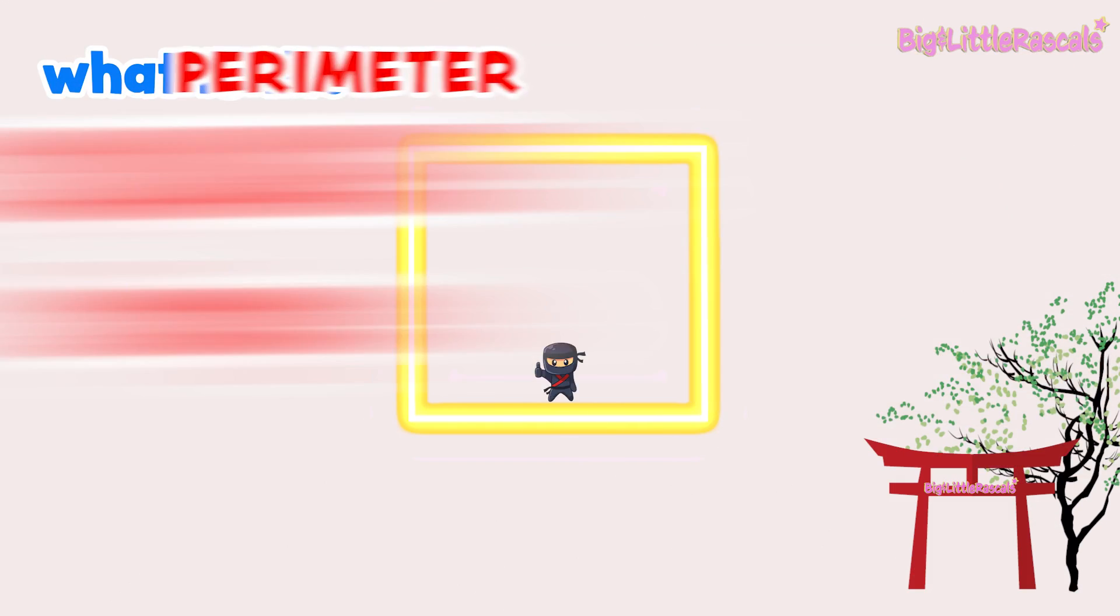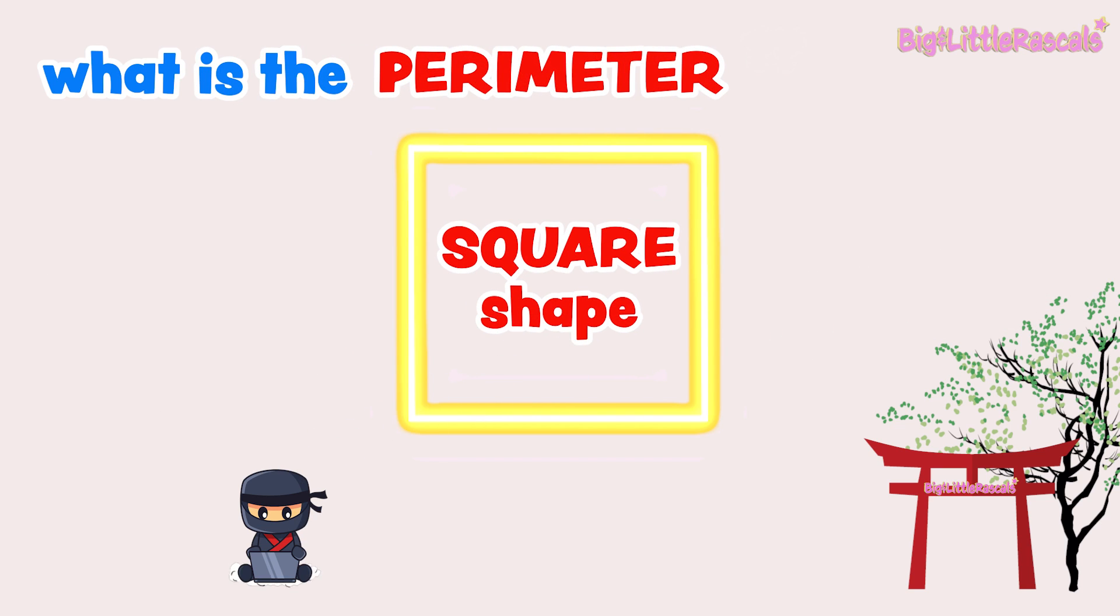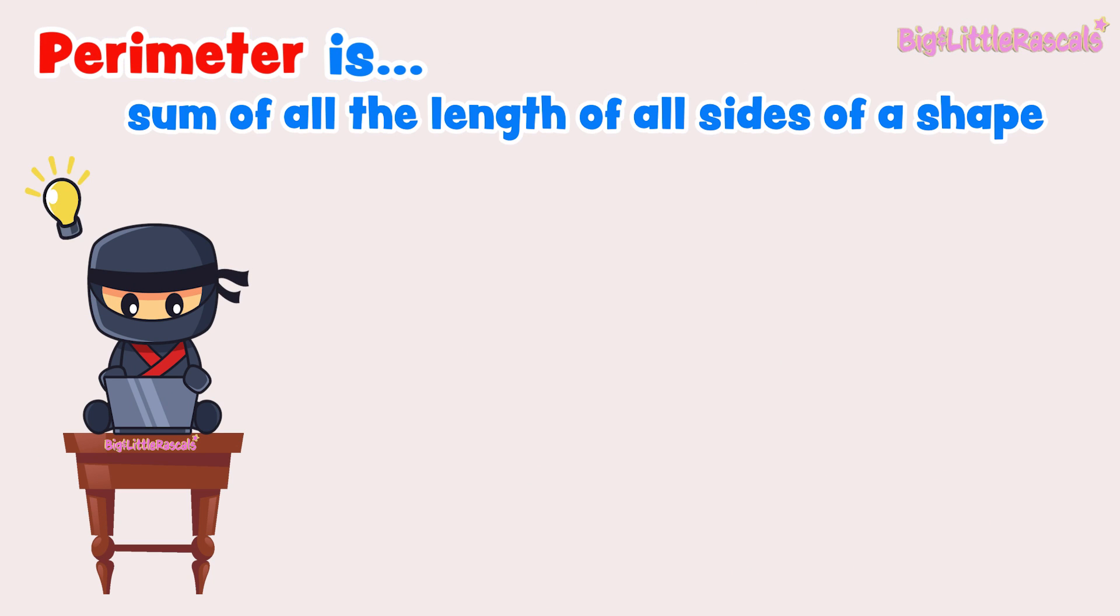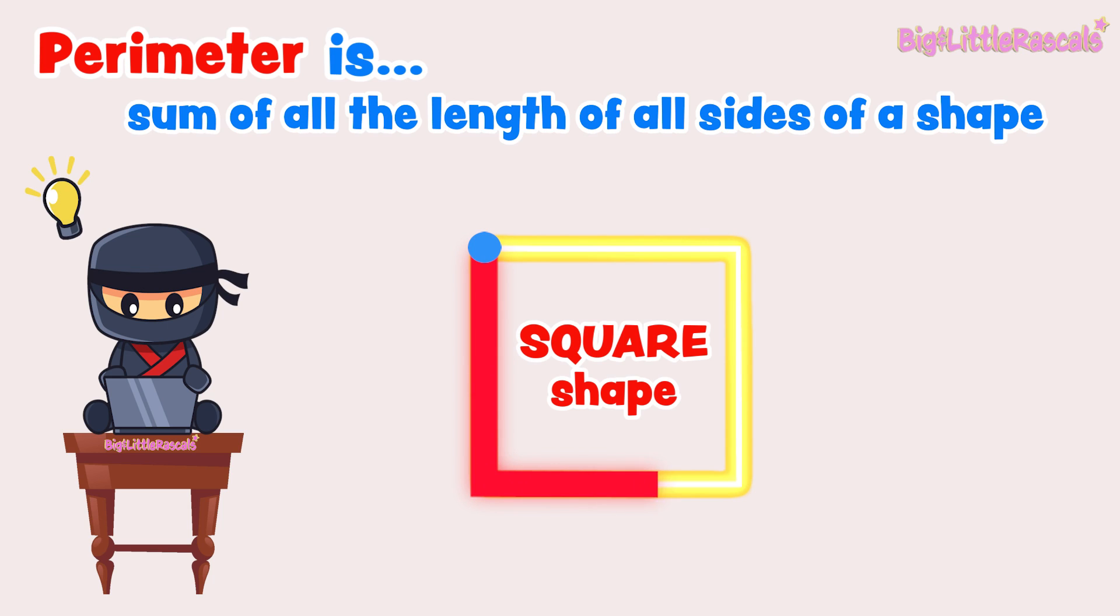Hey Ninja! Do you know what is the perimeter of this square shape? Okay, first let's see what is perimeter. Perimeter is the sum of all length of all sides around a shape. Perimeter is one dimensional because it only sums up all length of all sides of a shape until back to your starting point.